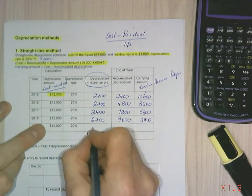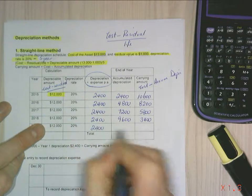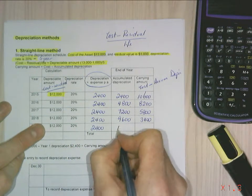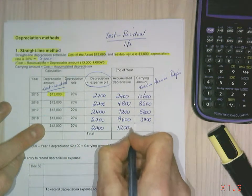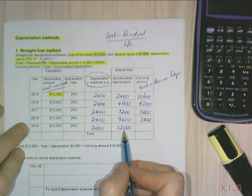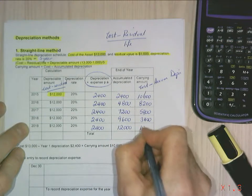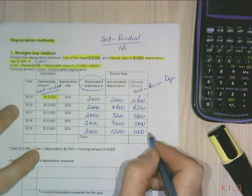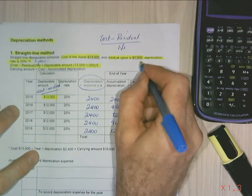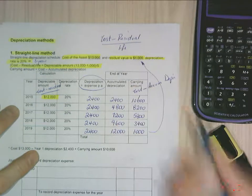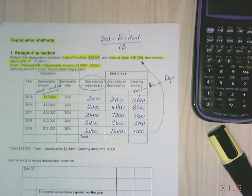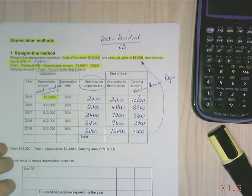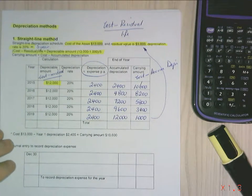And last year, I've got $2,400 as my depreciation. $12,000 as my accumulated depreciation. And $1,000 is my carrying amount at the end of the five years, which agrees with the residual value that we started on acquisition.